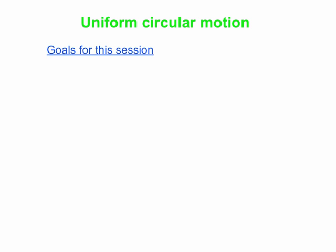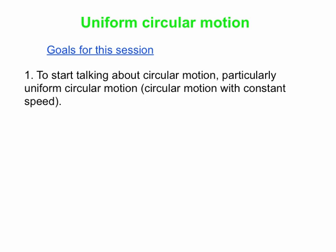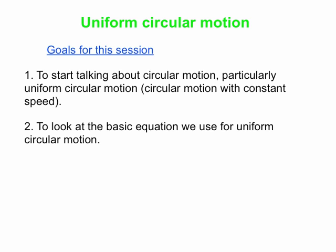Hello. Today we're going to talk about uniform circular motion. Our goals for today: first, to talk about circular motion, and then we'll talk about the special case of uniform circular motion — that is circular motion with constant speed. Our second goal is to look at the basic equation, specifically an equation for the acceleration when there is uniform circular motion going on.